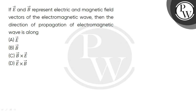Hello, let's read the question. If E and B represent electric and magnetic field vectors of the electromagnetic wave, then the direction of propagation of the electromagnetic wave is along what? Here we have a question where E and B represent electric and magnetic field vectors — in which direction do they propagate in an electromagnetic wave?